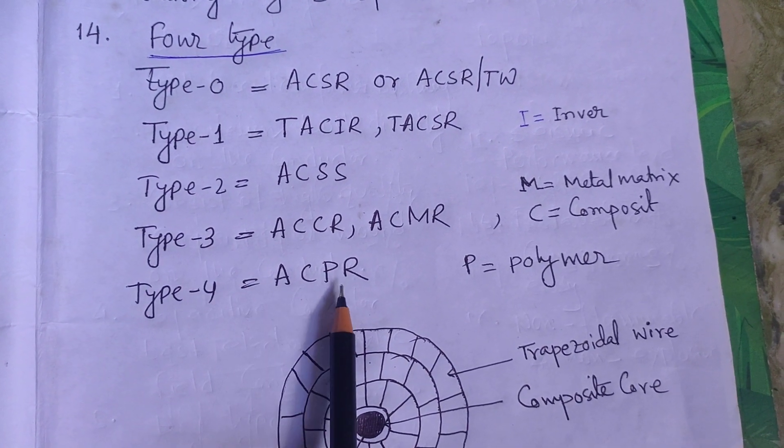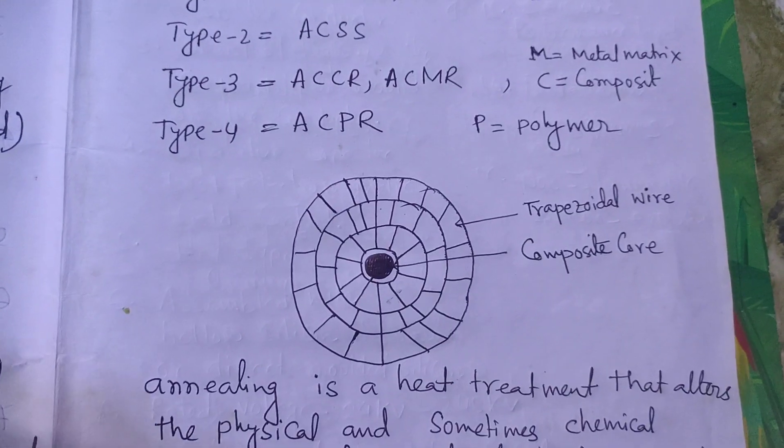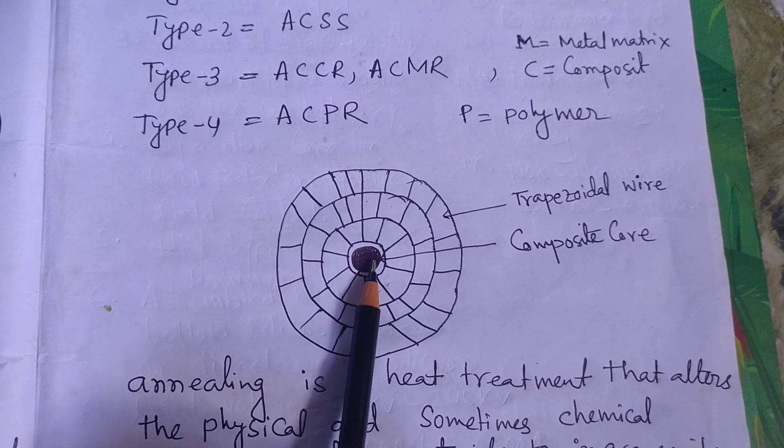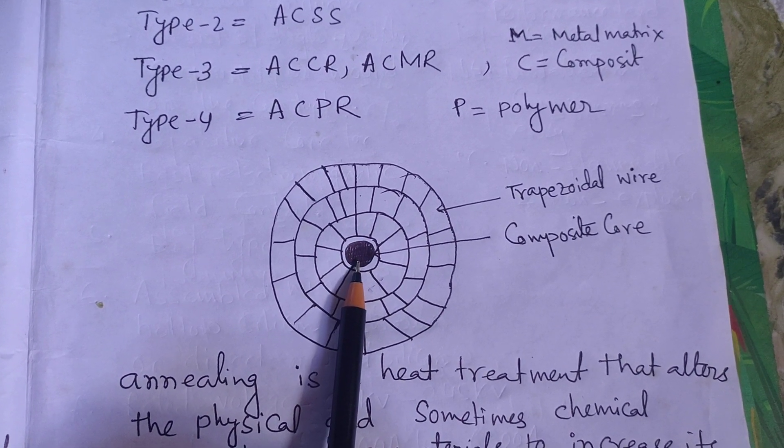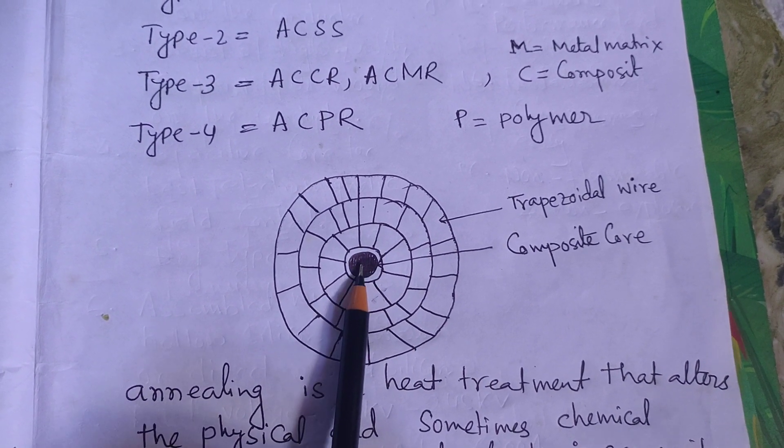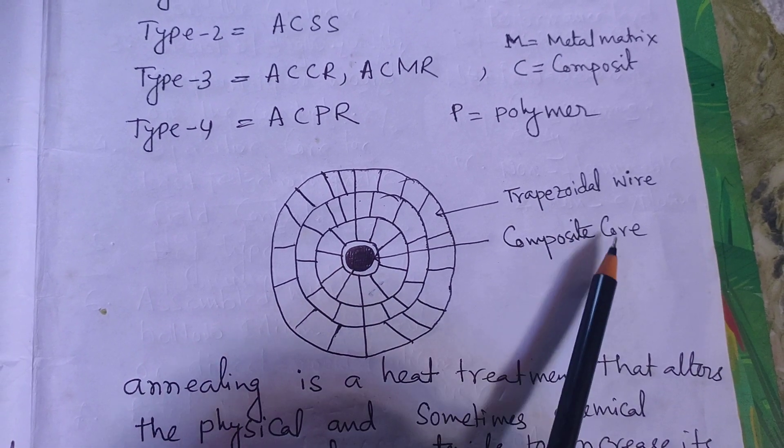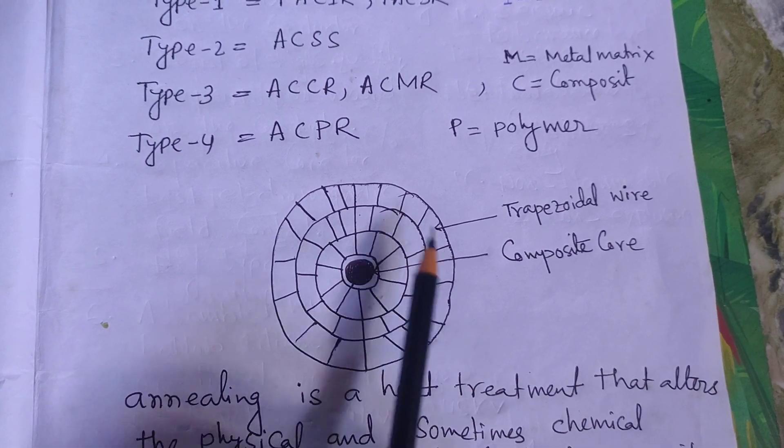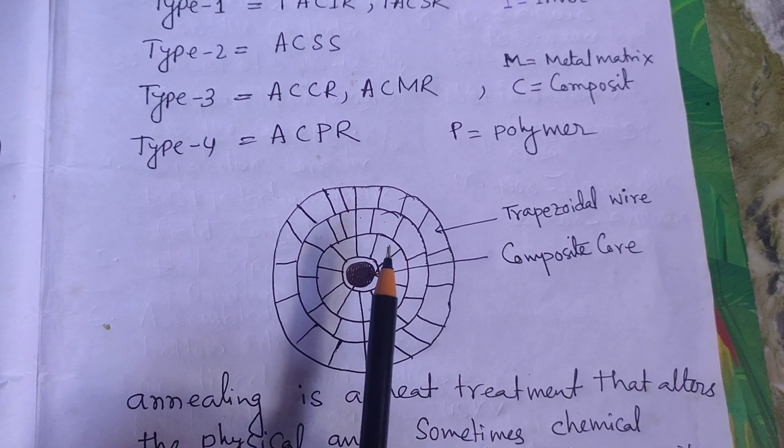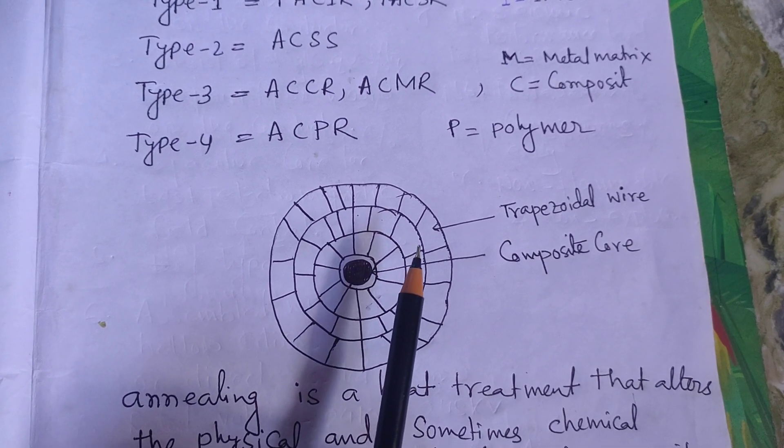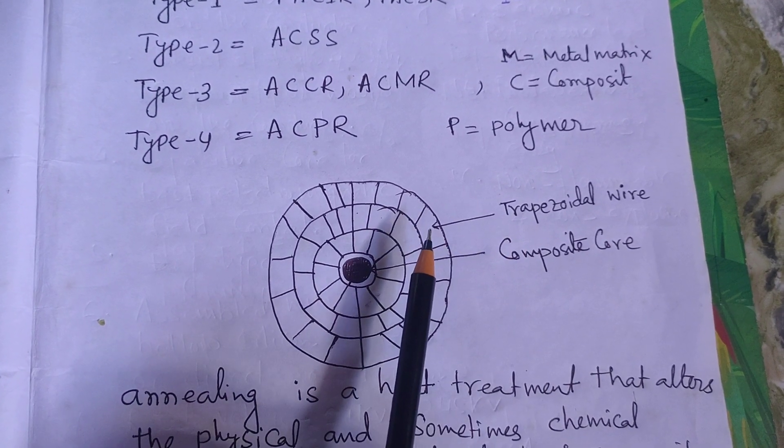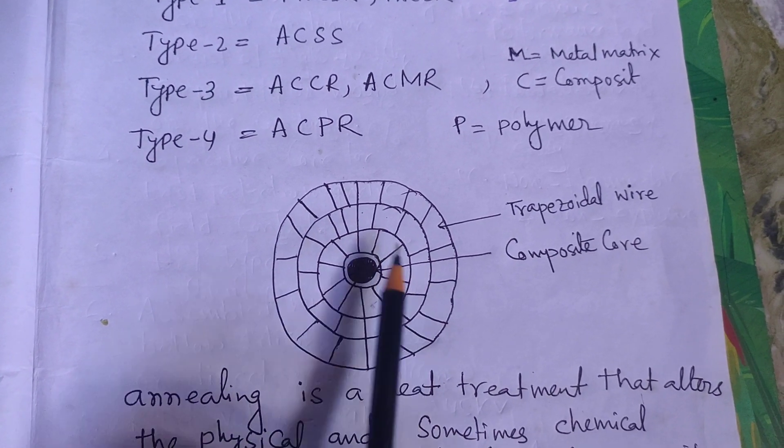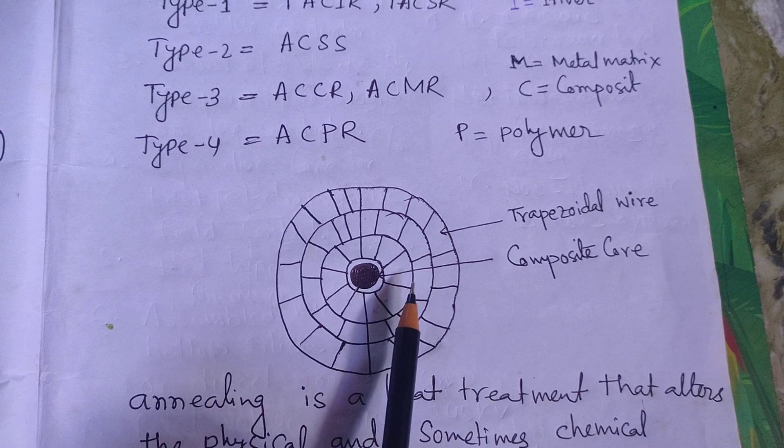A hand sketch drawing of HTLS conductors: Here the composite core is used as the center of the conductor. All the other aluminum wires are annealed aluminum. The shape is trapezoidal. The first layer has 1, 2, 3, 4, 5 - 10 conductors.